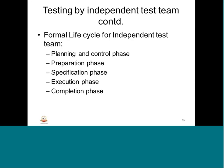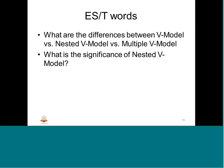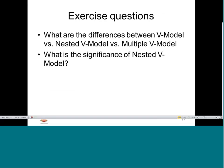There are 5 stages of the formal life cycle for independent testing: planning and control phase, preparation phase, specification phase, execution phase, and completion phase. We had an exercise on that.